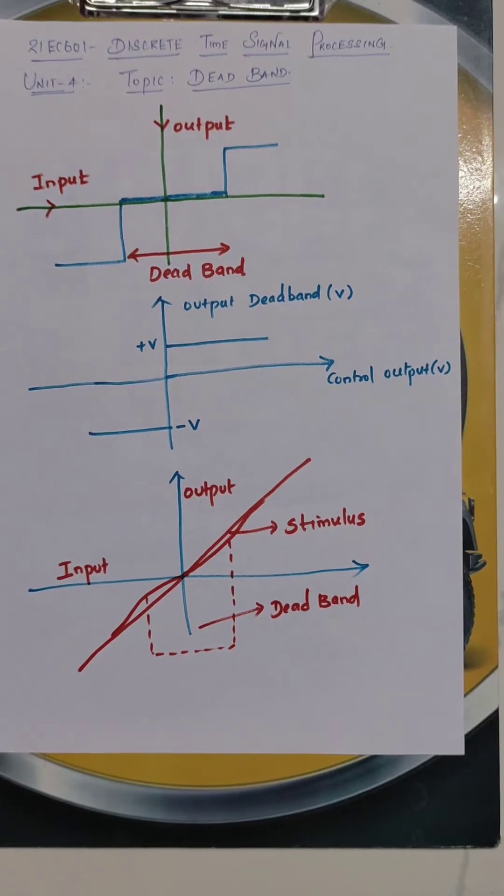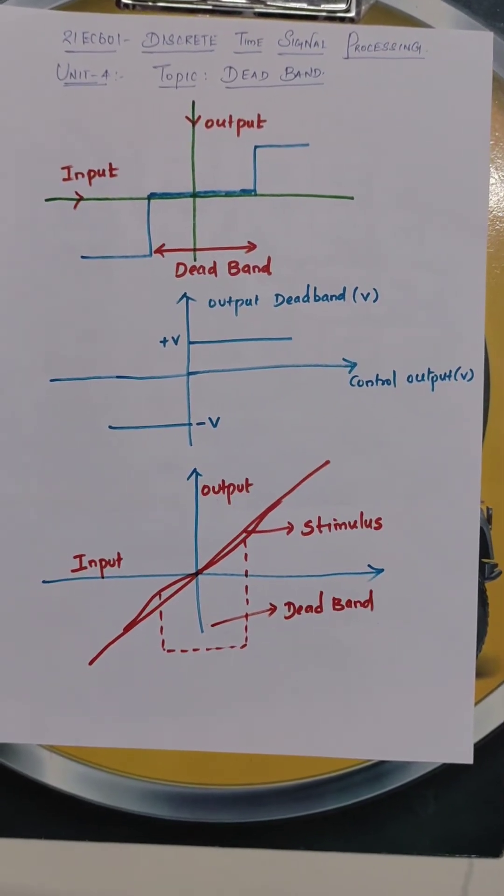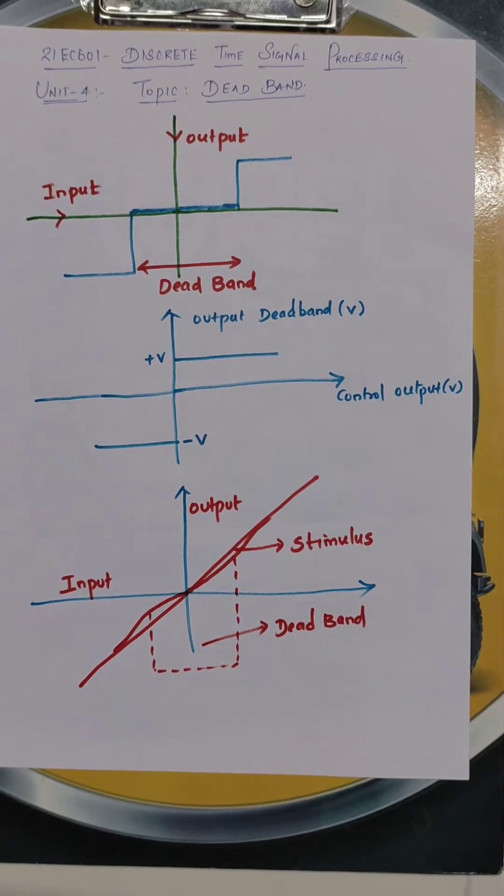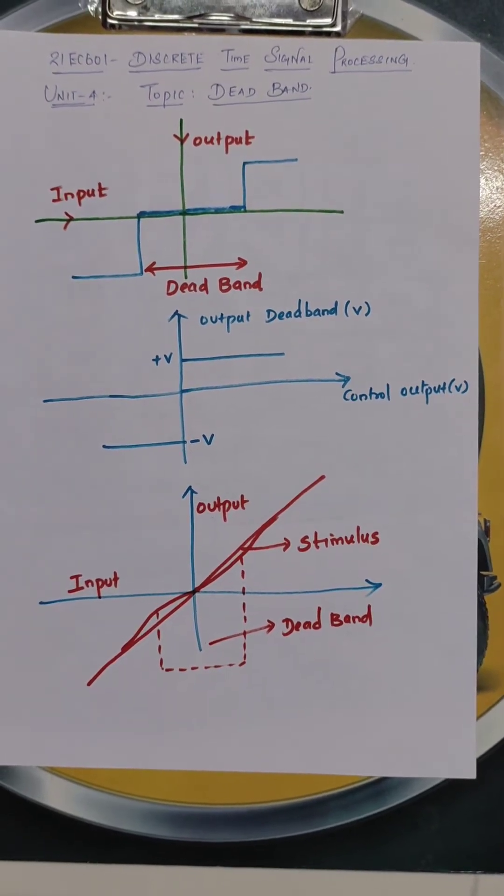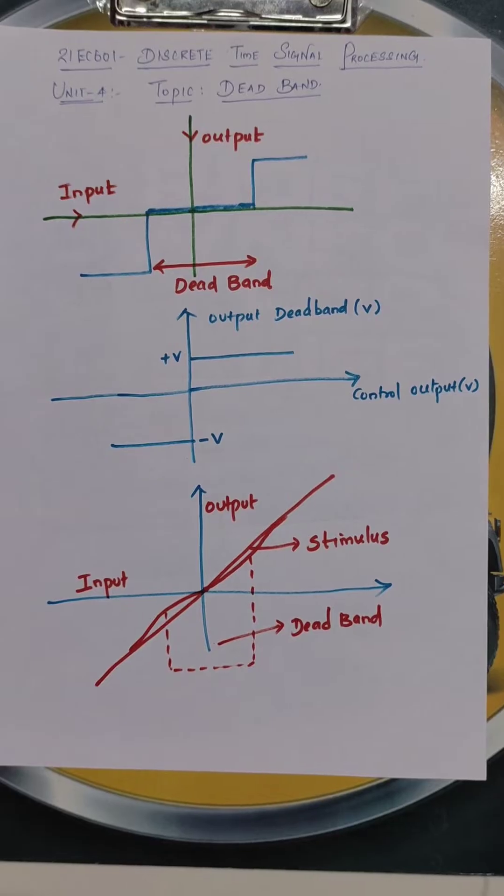Actually, what is deadband filter? How the graph should be there? Before going to the deadband, we need to understand the prerequisite of this particular deadband topic.